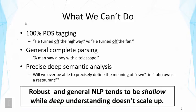Here are some specific examples of what we can't do today. Part-of-speech tagging is not easy to do 100% correctly. For example, 'he turned off the highway' versus 'he turned off the fan' — the two 'offs' actually have somewhat different part-of-speech categories. It's also very difficult to get complete parsing correct. For example, 'a man saw a boy with a telescope' can be very difficult to parse depending on the context.